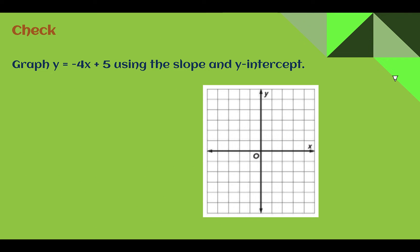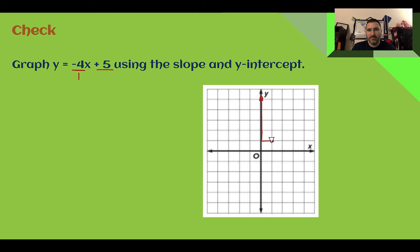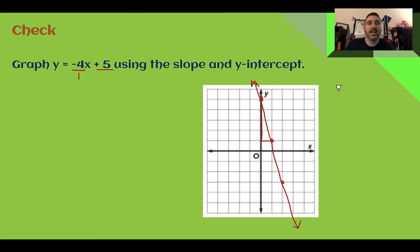Check your understanding: Graph y equals negative four x plus five using the slope and y-intercept. Pause the video now and complete this check. Let's check. First, my y-intercept is at positive five — one, two, three, four, five. There's my y-intercept. And from there, I'm going to go down four, but this is really a ratio of down four over one. So my rise is down four and then my run is over one. Plot a point, then keep going — down four over one, down four over one. Connect using a straight edge, add arrowheads to show it keeps going in both directions. That is my graph of y equals negative four x plus five.